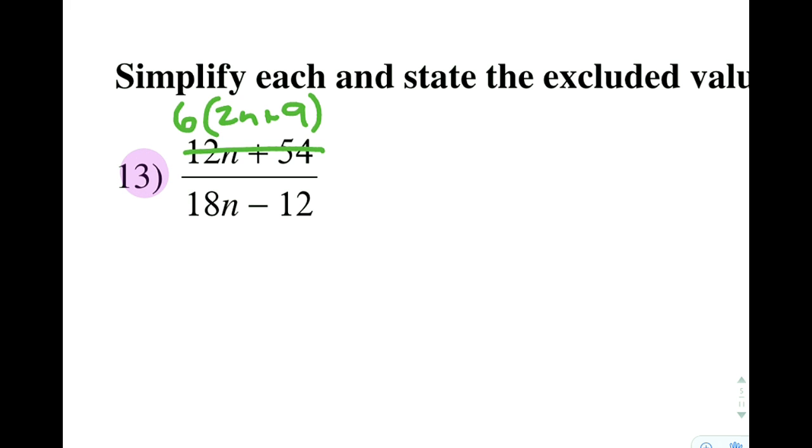Notice how when I do these problems, my favorite way is to write directly above the numerator and then cross out what I had before, and the denominator to write directly below and cross out what I had before. So on the bottom in common, I have a 6 again, leaving me with 3n minus 2.